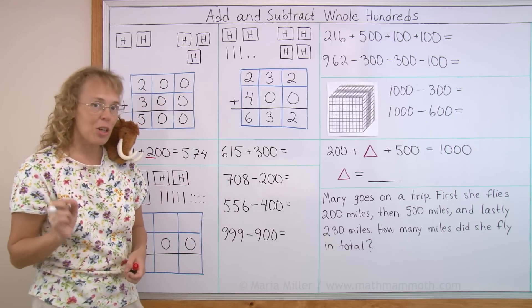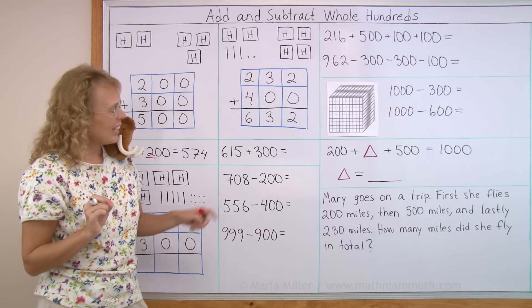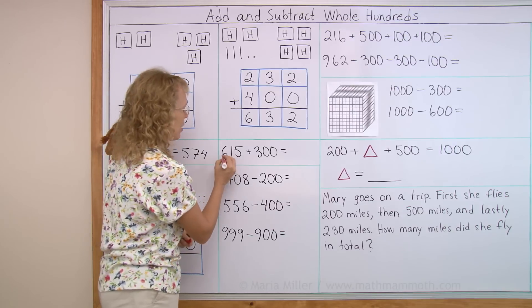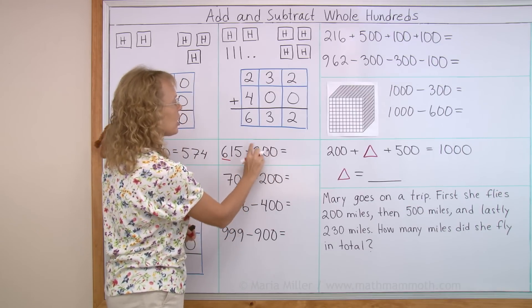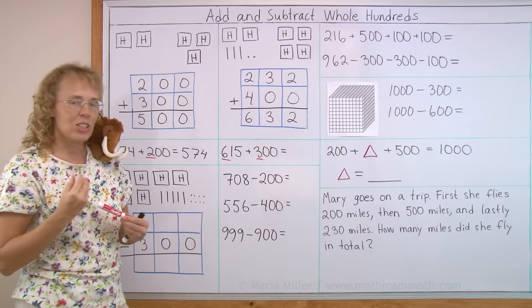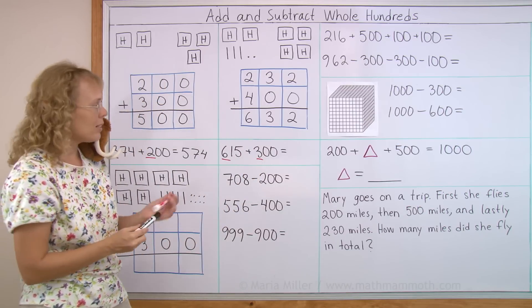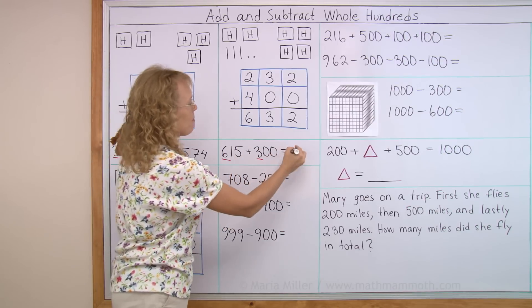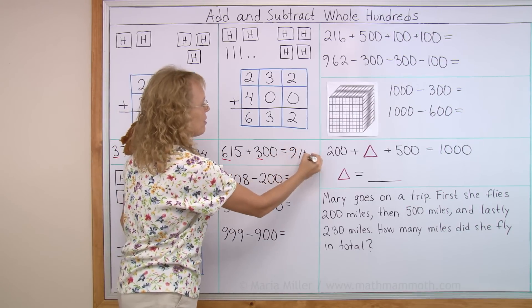How about here? Can you do that one now on your own? 615 plus 300. Look at the hundreds. Since this is whole hundreds, then it's not going to affect your tens or ones. There's still going to be the 15. We just add 6 plus 3, 9, 915.